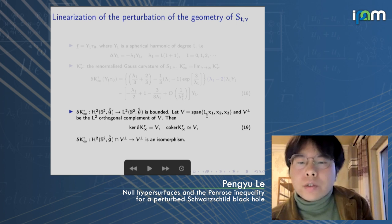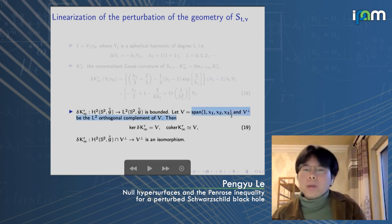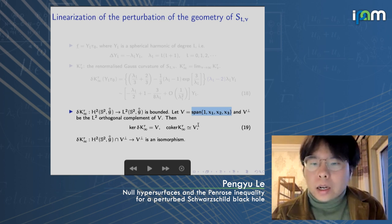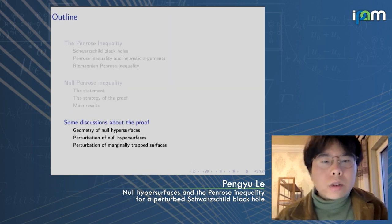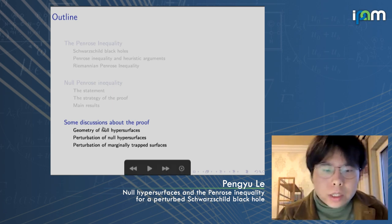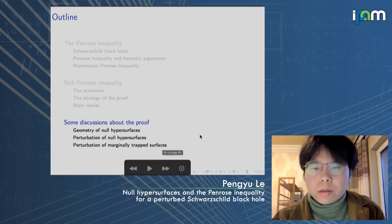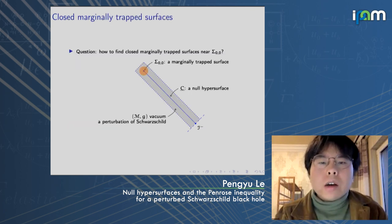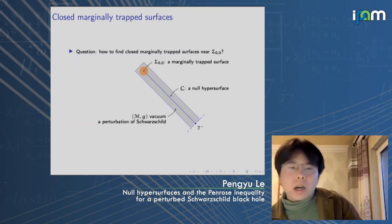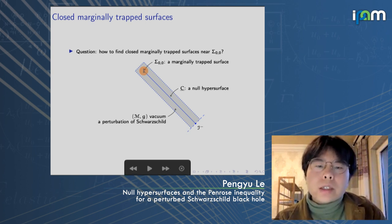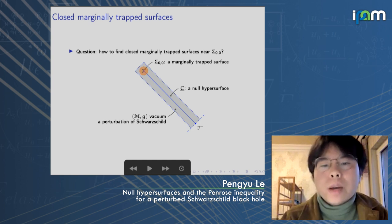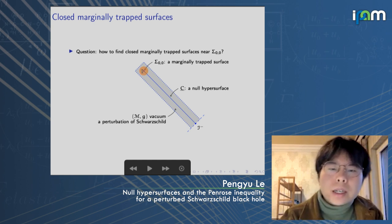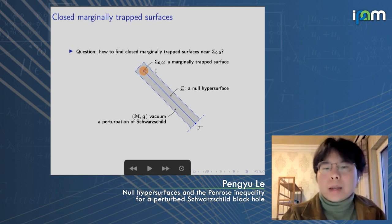The kernel of this linearized perturbation consists of the constant functions and the first eigenspace of the Laplacian — a four-dimensional space. This four-dimensional space corresponds to the four-parameter family stated in the theorem. The last aspect of the proof is how to perturb the marginal trap surface. The question is: given the spacetime with a marginal trap surface, how do we find all nearby marginal trap surfaces?